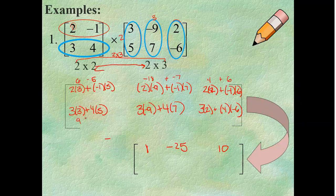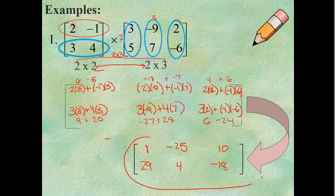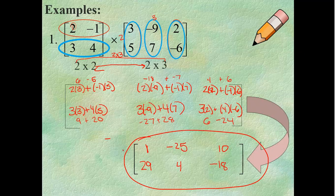3 times 3 is 9. 4 times 5 is 20. So, I'll get a 29 there. And negative 27 plus 28, I will get a 4. And then, 3 times 2 is 6 minus 24. That's a negative 18. So, this is my final answer. That's the resulting matrix that comes out of this.